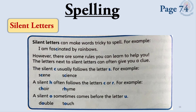Spelling: Silent letters. Silent letters can make words tricky to spell. For example: 'I am fascinated by rainbows.' When we pronounce the word 'fascinated,' the C sound is not there — that means the letter C is silent. However, there are some rules you can learn to help you. The letters next to silent letters can often give you a clue.